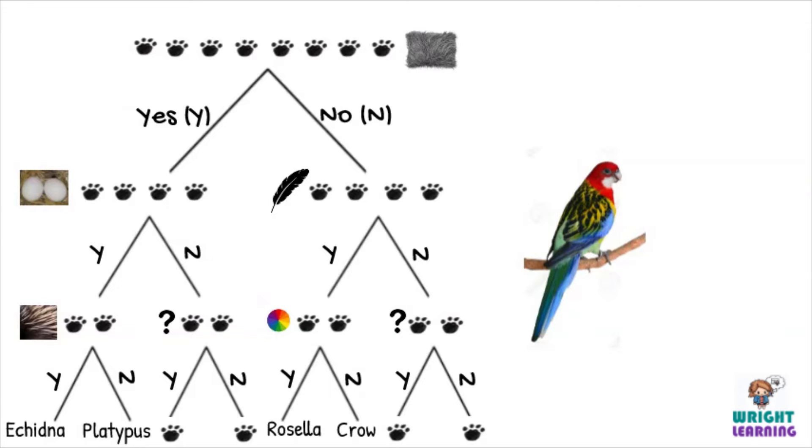Say we notice that it doesn't have fur, it does have feathers, and it's colorful. And our tree diagram, or this form of dichotomous key, tells us that it's a rosella.